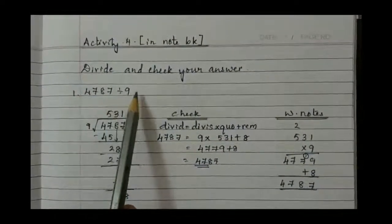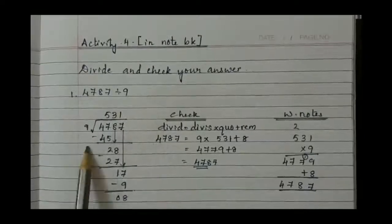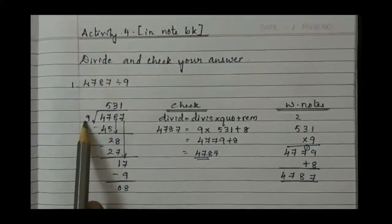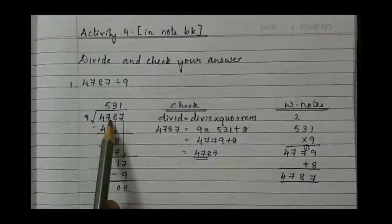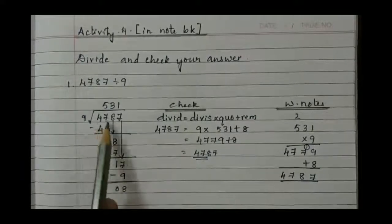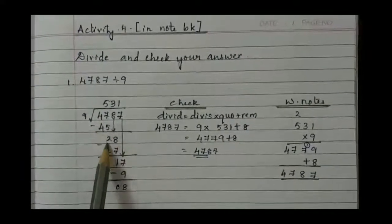4787 divided by 9. Do the division in the regular way. So 9 how many is 47? It is not possible, so take less than it. 9 times 5 is 45.